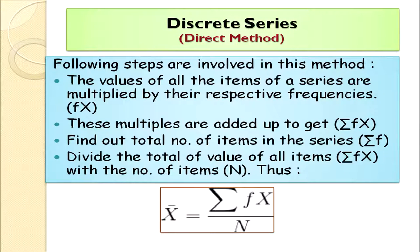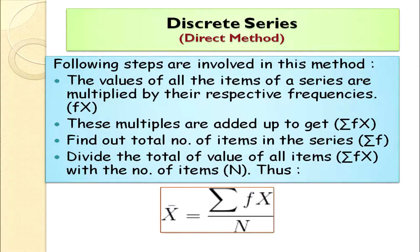In discrete series, we have x (item values) and f (frequencies). For the direct method: multiply each item value by its respective frequency to get the fx column, then sum all fx to get Σfx. The total number of observations n equals the sum of frequencies (Σf). The formula is: x̄ = Σfx / Σf.